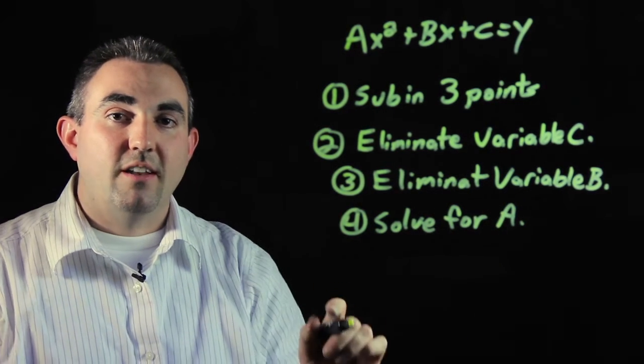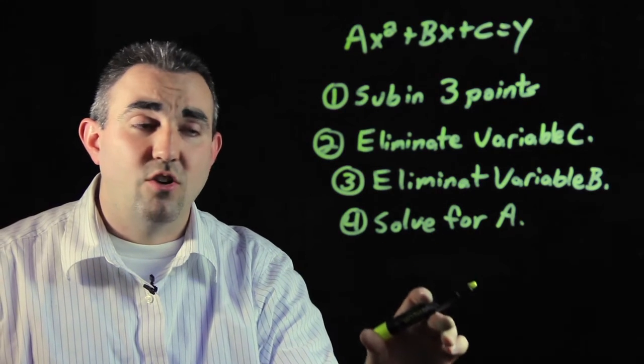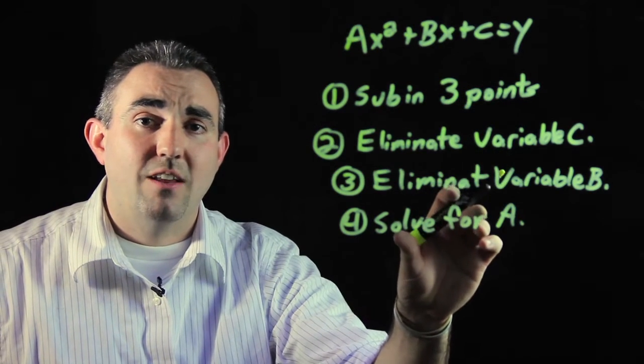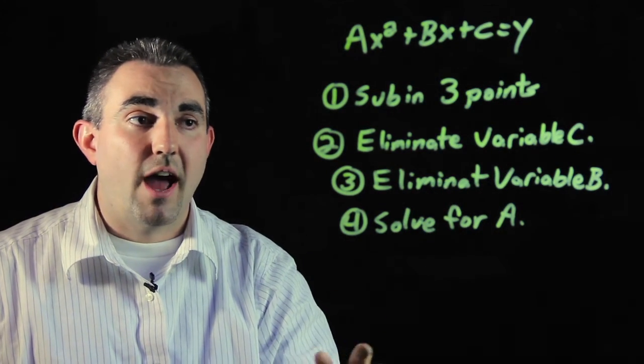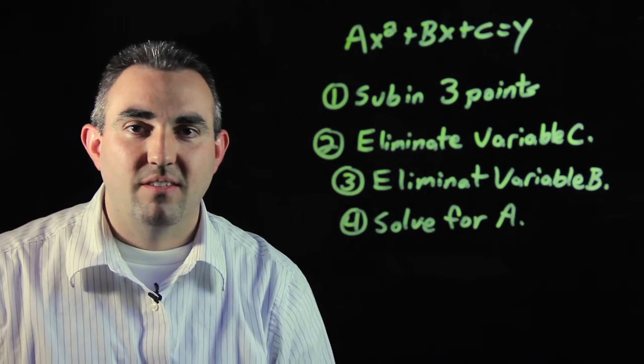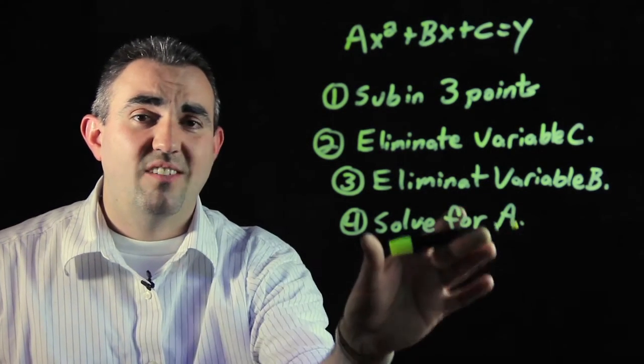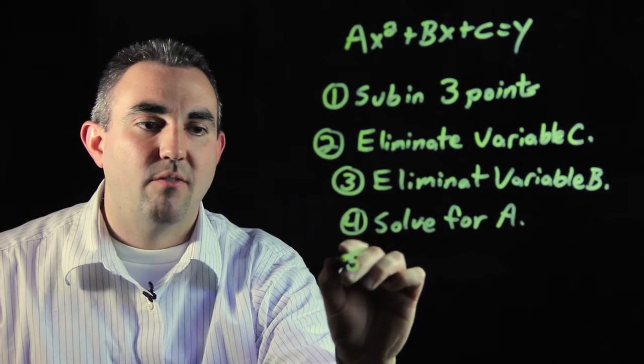Now you're going to take a, your answer that you have for a, you're going to sub it back into one of the equations that you got after we eliminated variable c. One of those two equations that we have, stick a back into that and solve for b.